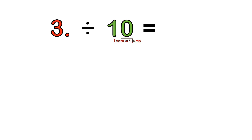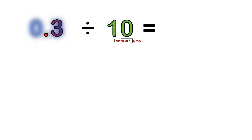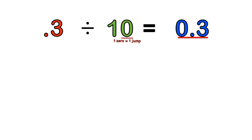For 3 divided by 10, we have one zero, which means we need to make one jump to the left. So we move the decimal point to the left once, and we can read we have point three. Since we have nothing before the point, the answer is zero point three. So 3 divided by 10 equals 0.3.